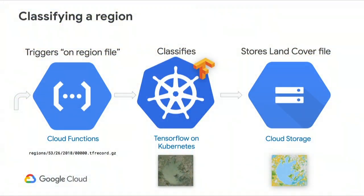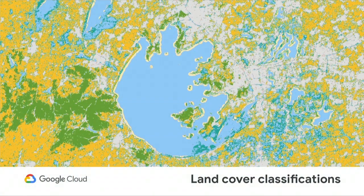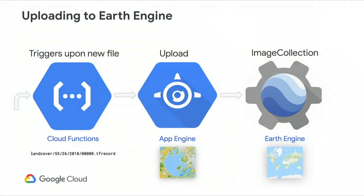In the non-visible spectrum bands, things like water and concrete stand out much more clearly. As Landsat images are extracted and written to Cloud Storage, they trigger a Cloud Function that sends a request to a Kubernetes cluster running our TensorFlow model to do predictions. These predictions are at a file level, and once classified, they are stored back into Cloud Storage. Then another Cloud Function tells the server to upload that image back into Earth Engine, where it's stored in an image collection containing land cover maps for the entire world for all extracted years.